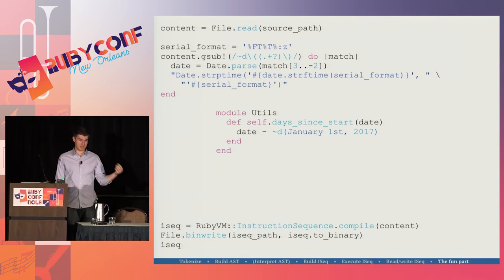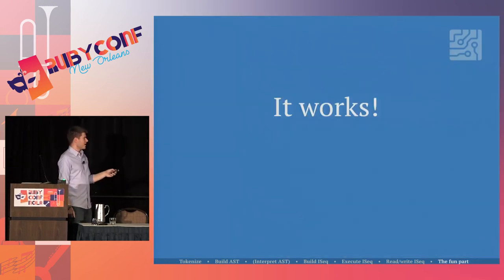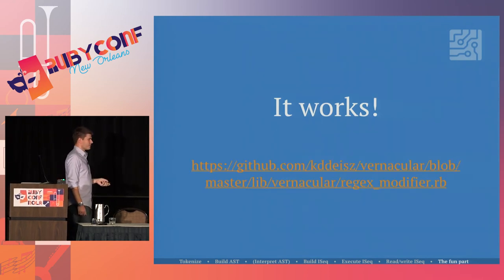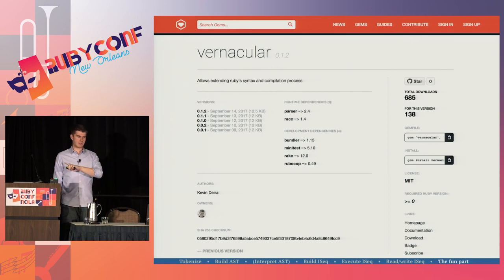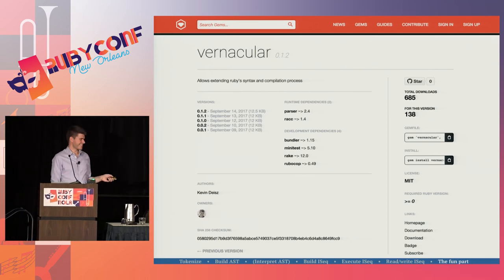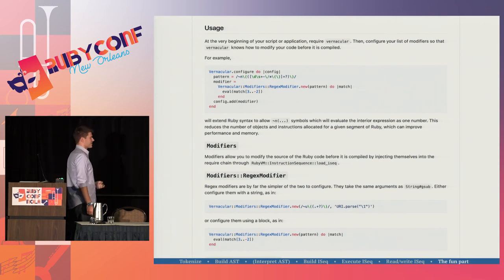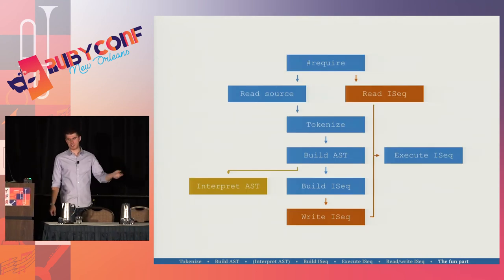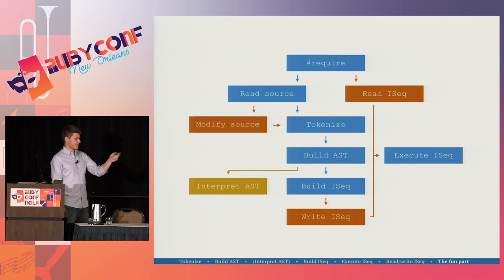So this works — you can do this. I wrote a gem called Vernacular. You can write your own arbitrary gsubs, it will hook into the compilation process, and you can run it in production if you like. You basically define a regex modifier and it does stuff for you. What we've done is extended this flowchart — we've added a step where we modify the source after we read it, and then we tokenize it.